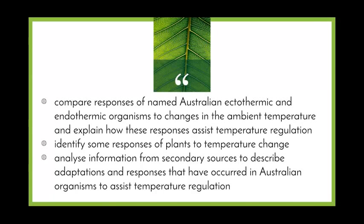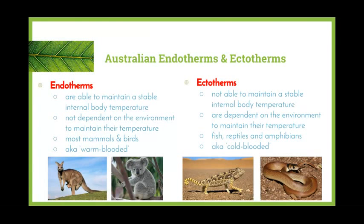Now let's look at some responses of named endothermic and ectothermic organisms to changes in ambient temperature. Note that ambient temperature simply refers to the temperature of the environment, and the terms responses and adaptations can be used interchangeably. Endotherms are able to maintain a stable internal body temperature and are not dependent on the environment to do this. Most mammals and birds are endotherms — also referred to as warm-blooded, though we try to move away from that term. Australian examples include kangaroos, koalas, bilbies, wallabies, dolphins, emus, and kookaburras.